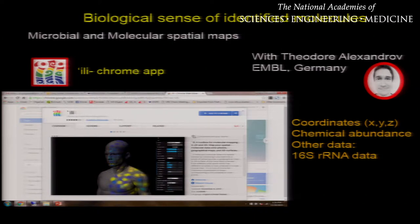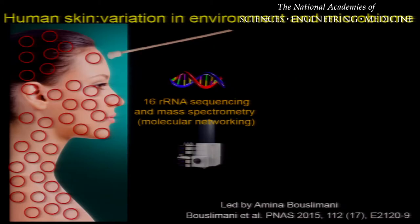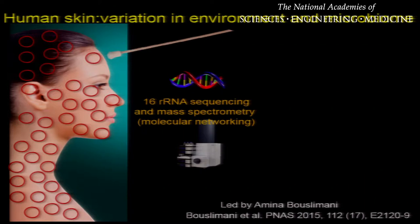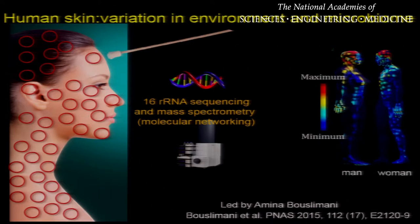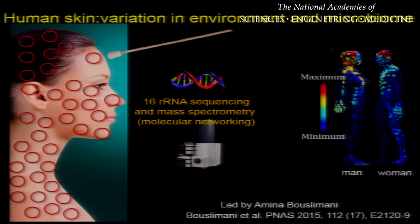Now we've appreciated the challenges associated with big data and looked at some of the tools we can use. Let me show you the applicability of these tools through some examples, beginning with the human skin study. In order to map the microbiome and metabolome of human skin, we sampled 400 sites on the body of a man and a woman through 16S rRNA sequencing and mass spectrometry. We then mapped this information back onto a 3D model of a man and a woman. Each spot represents one sampling site, and the color represents the abundance of the microbe or the molecule.